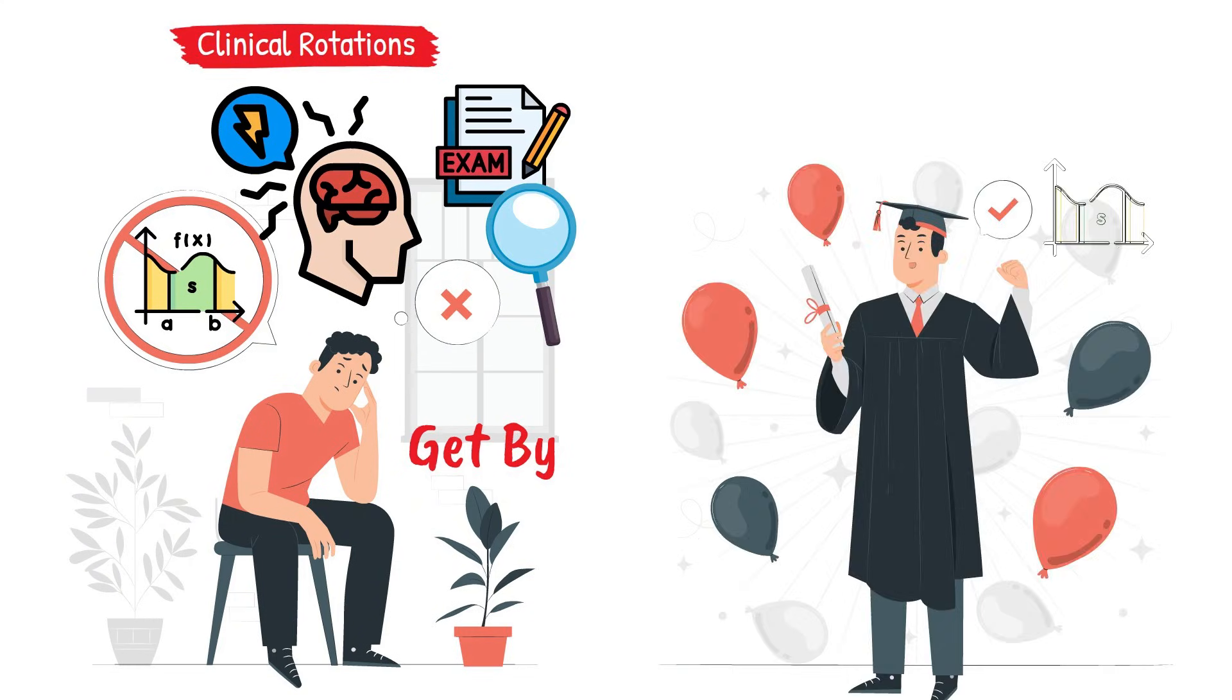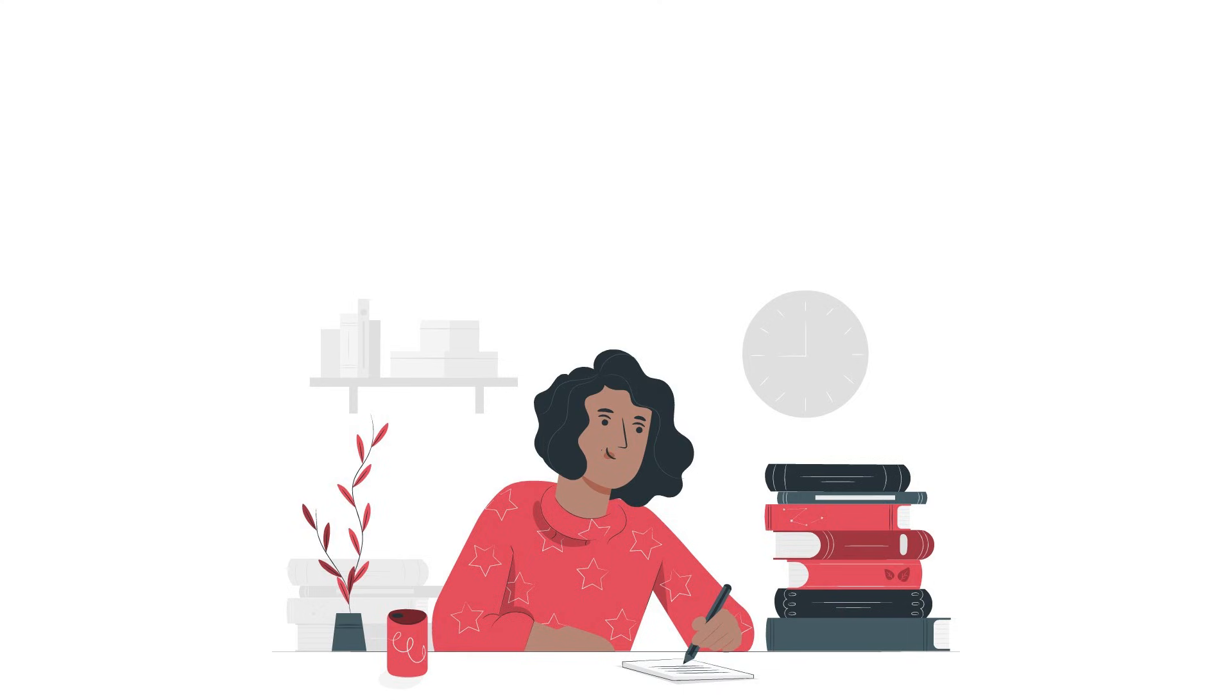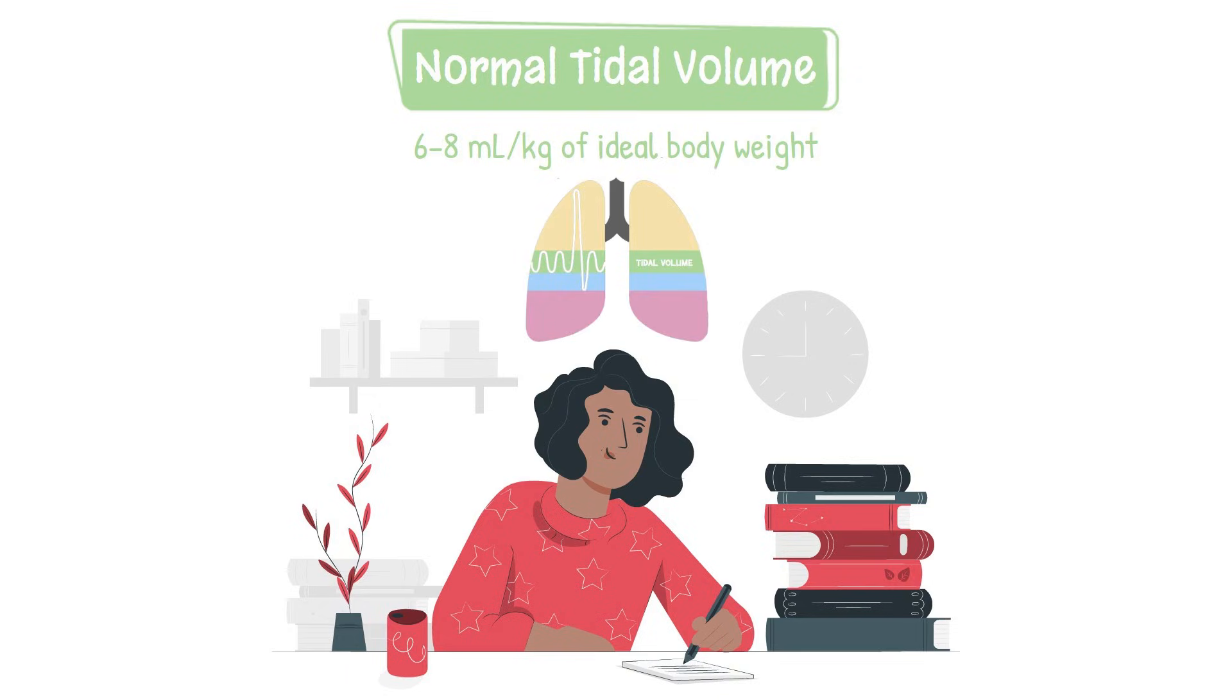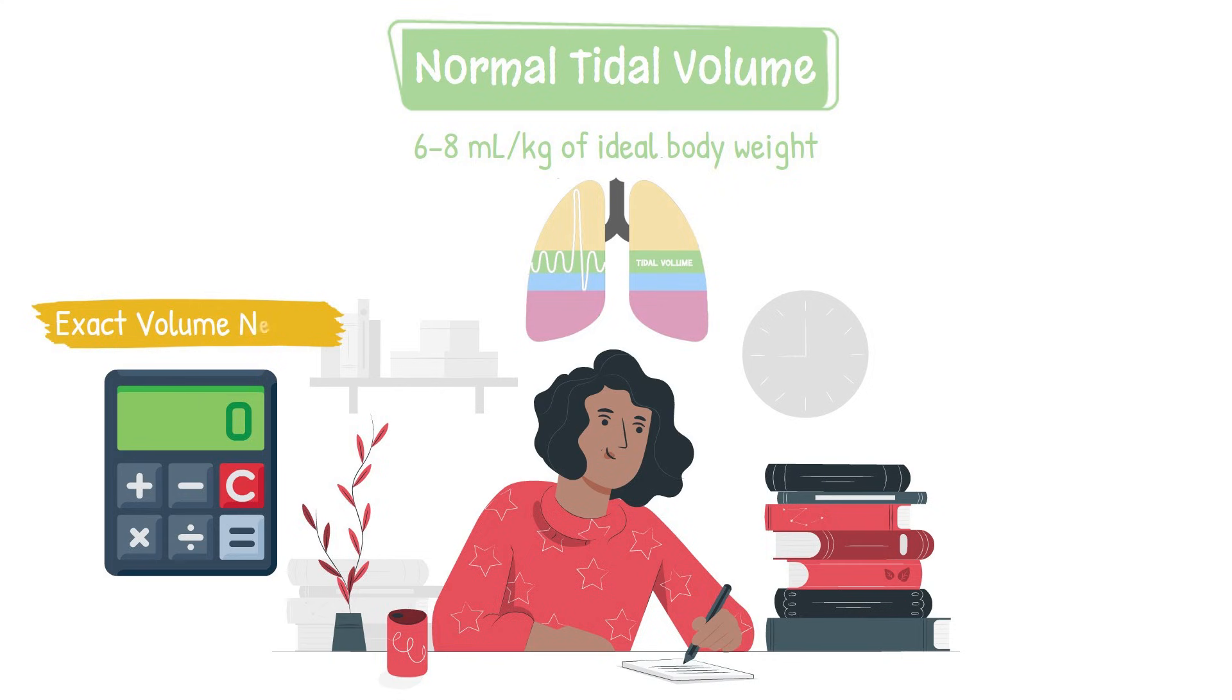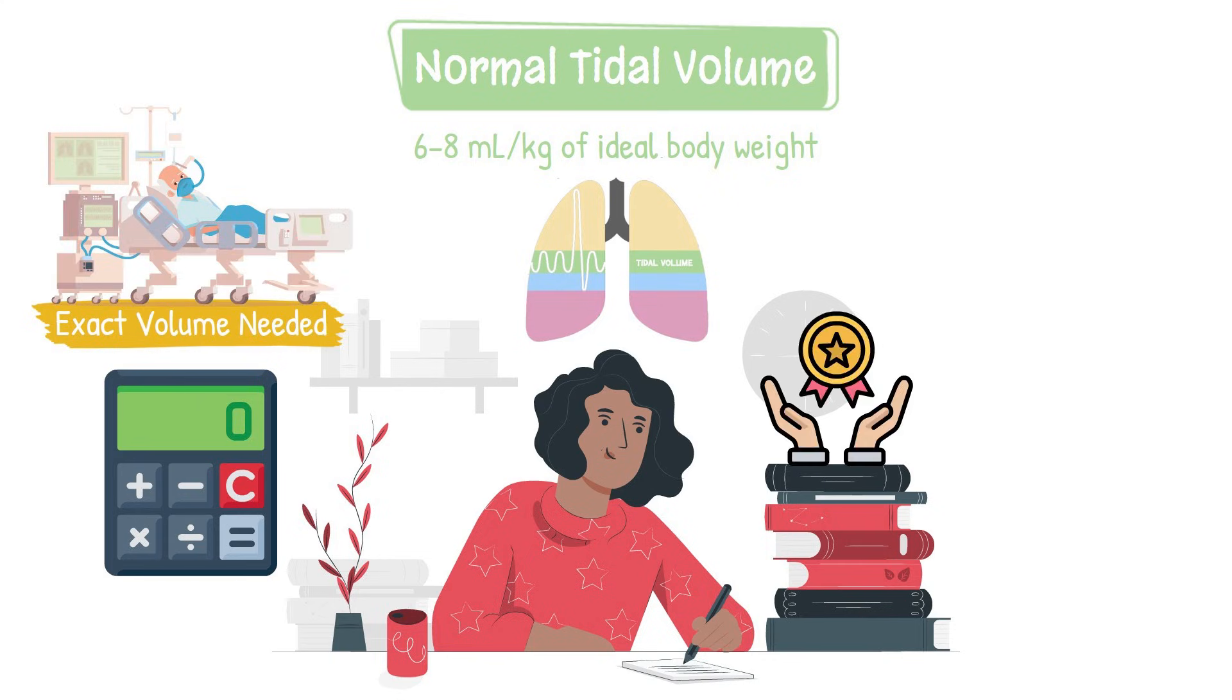Conversely, mastering these calculations helps you gain a deeper understanding of the concepts behind them. It's one thing to memorize that a normal tidal volume is around 6 to 8 milliliters per kilogram of ideal body weight. But when you apply that formula to calculate the exact volume needed for a patient during ventilator setup, you begin to appreciate the nuance of individualized care.